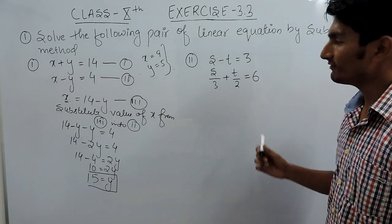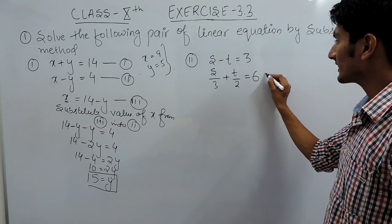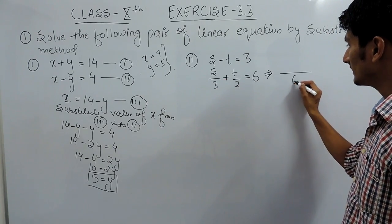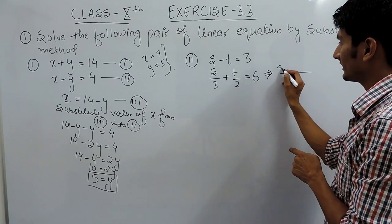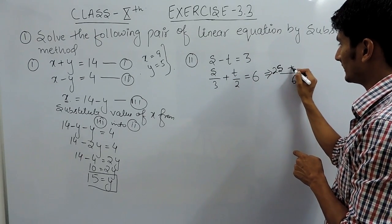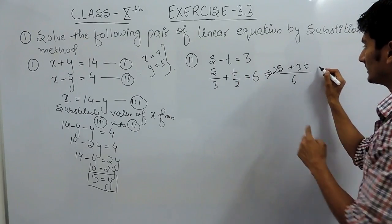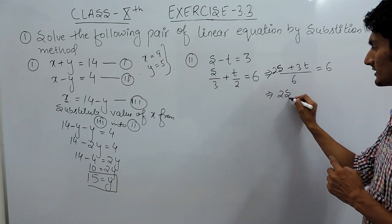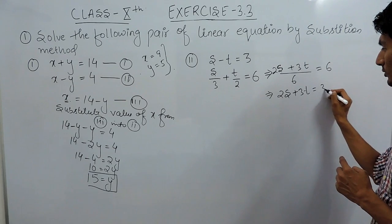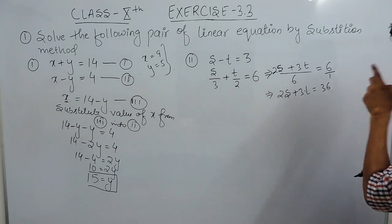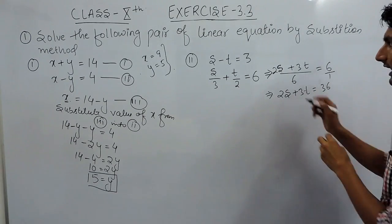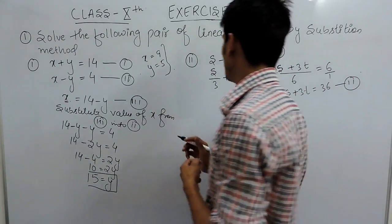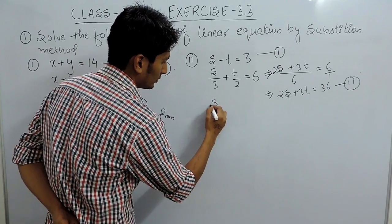For the second part, the equation is in fraction form, so first we convert it to a simple form. We take the LCM which is 6, and multiplying gives 2s plus 3t equals 36 after cross-multiplying. So our first equation is this and the second equation is this.